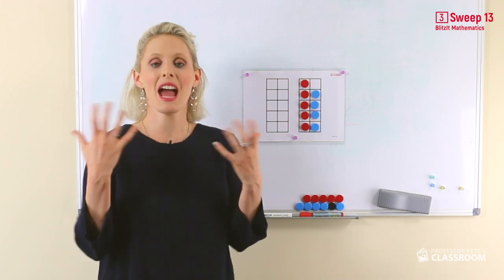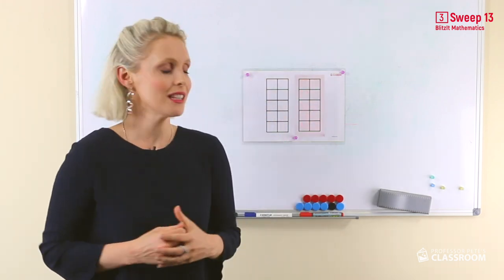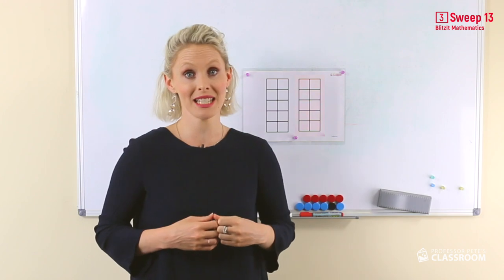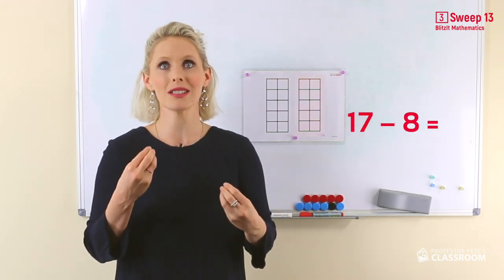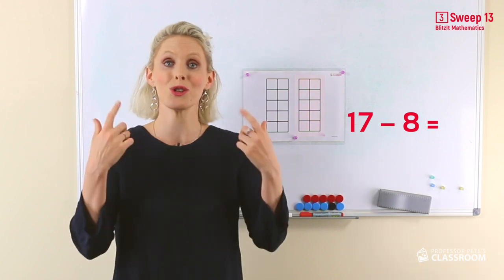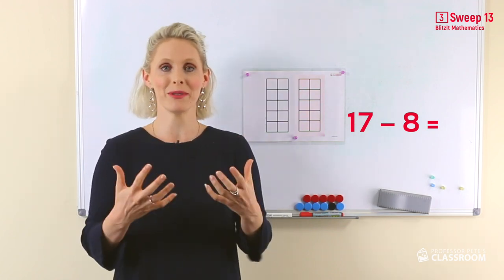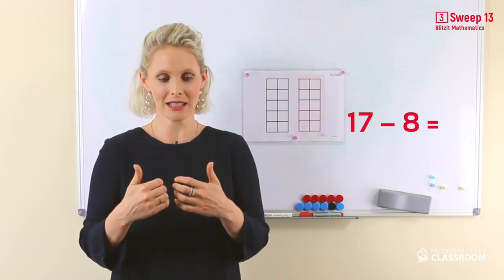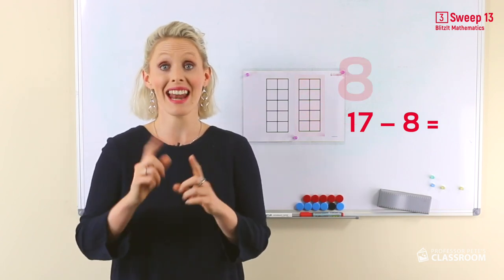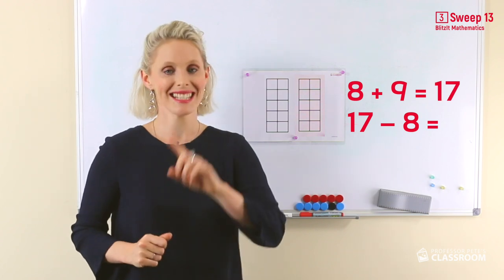Now, how about a bigger number? Like 17. 17 take away eight equals... Well, you need to think about what you already know. From your doubles, add one. 17 take away eight. Well, I know that eight and nine equals 17.